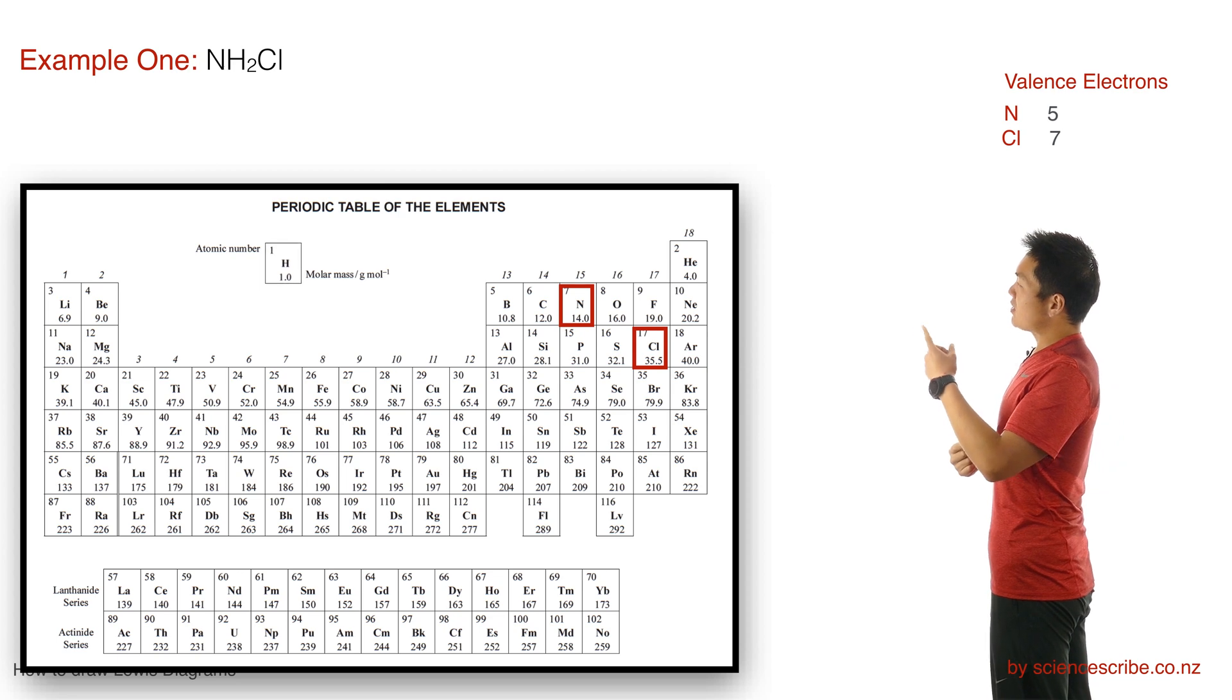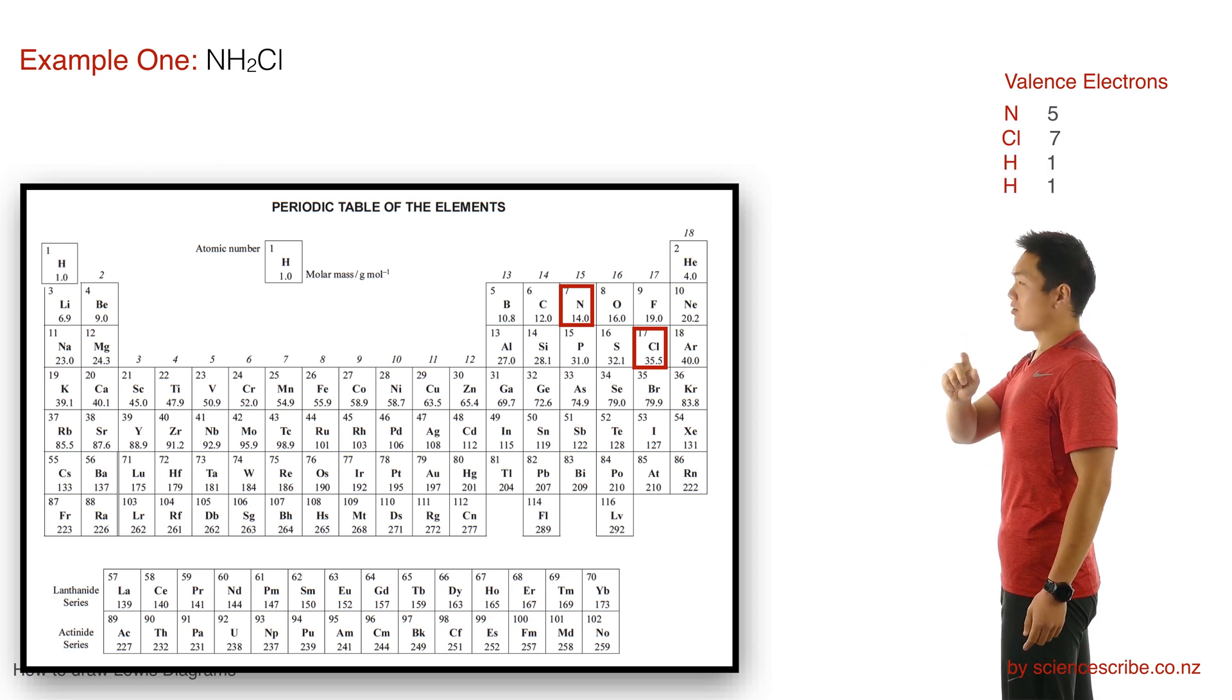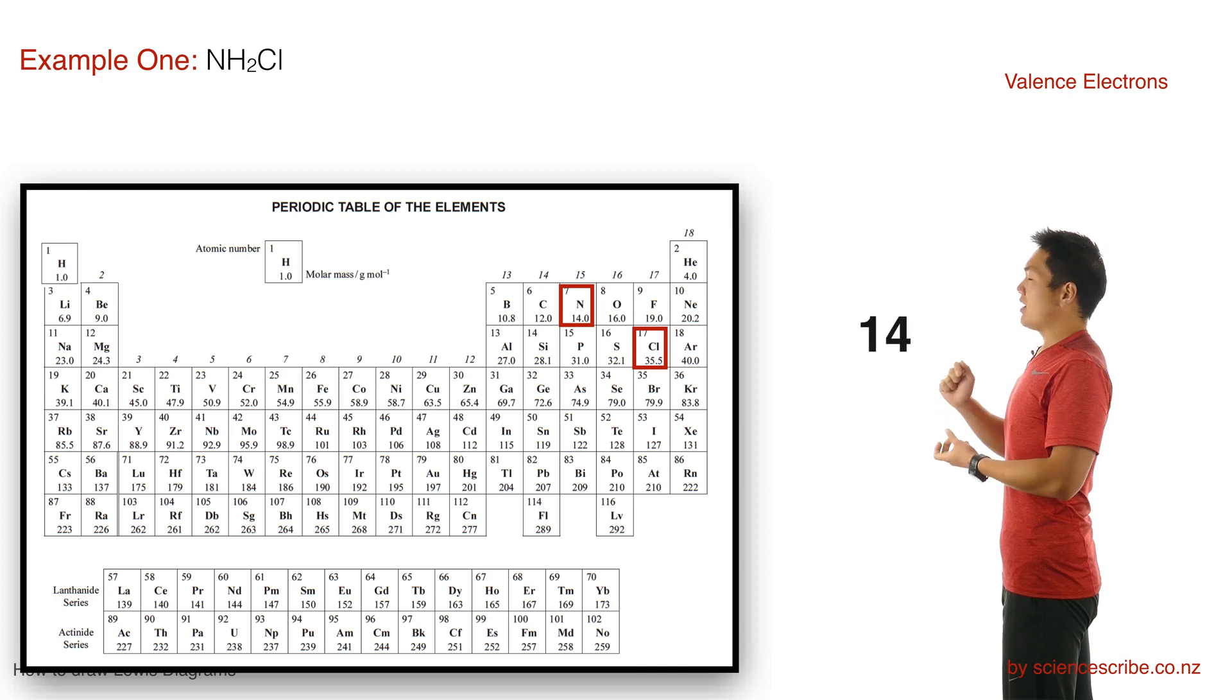Even though hydrogen is usually shown in the middle there, it's actually considered a part of group 1, which means that each hydrogen will supply just 1 valence electron. I'm going to keep a note of these numbers after I total them up, so that gives me a total of 14 valence electrons to work with.